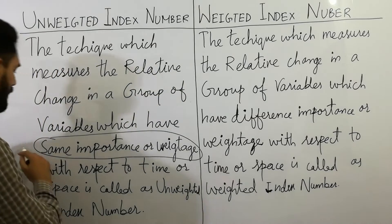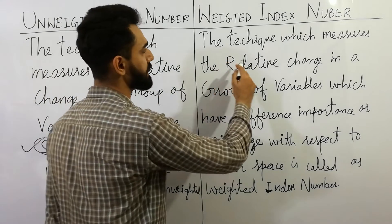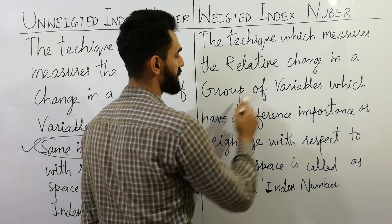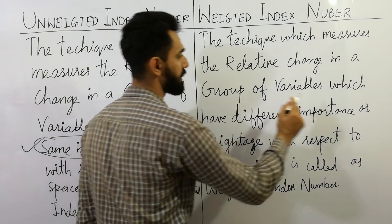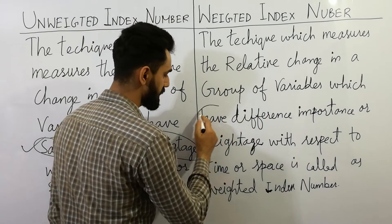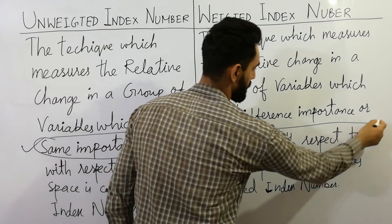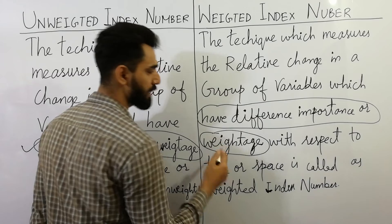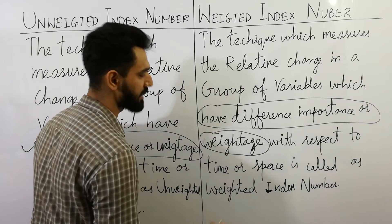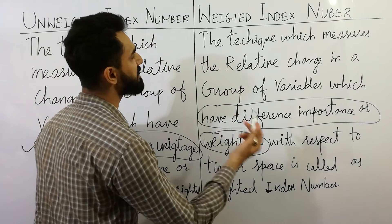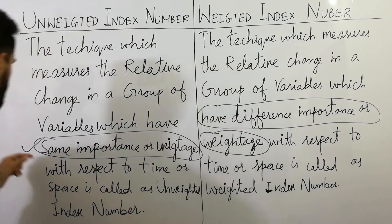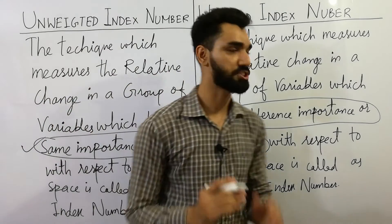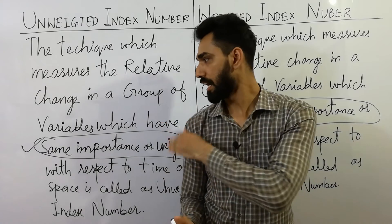The technique which measures the relative change in a group of variables which have different importance or weightage with respect to time or space is called a weighted index number. So remember: unweighted is always similar, and weighted is always different.